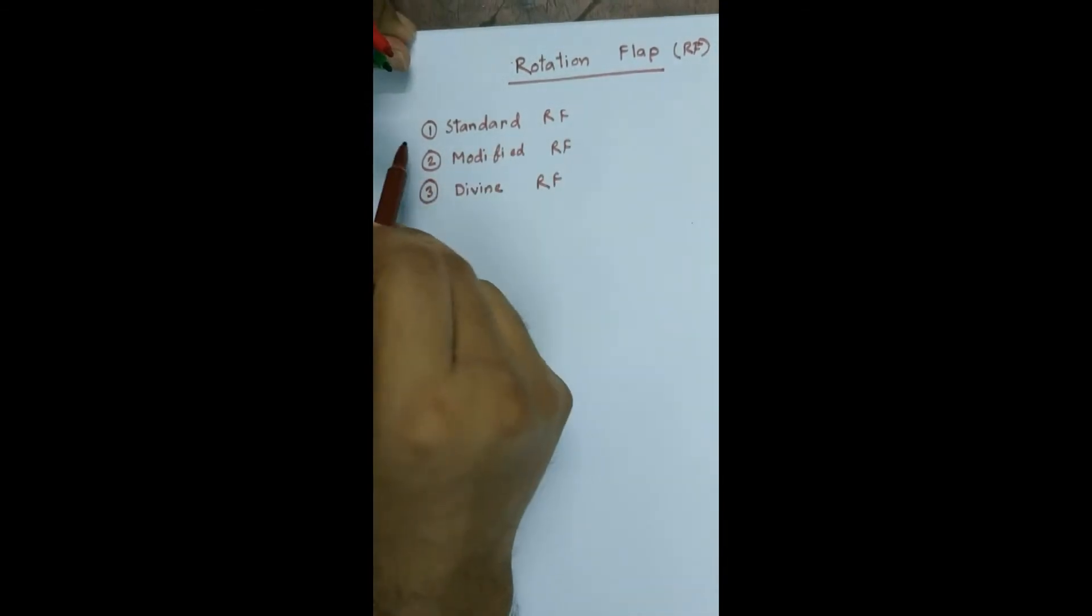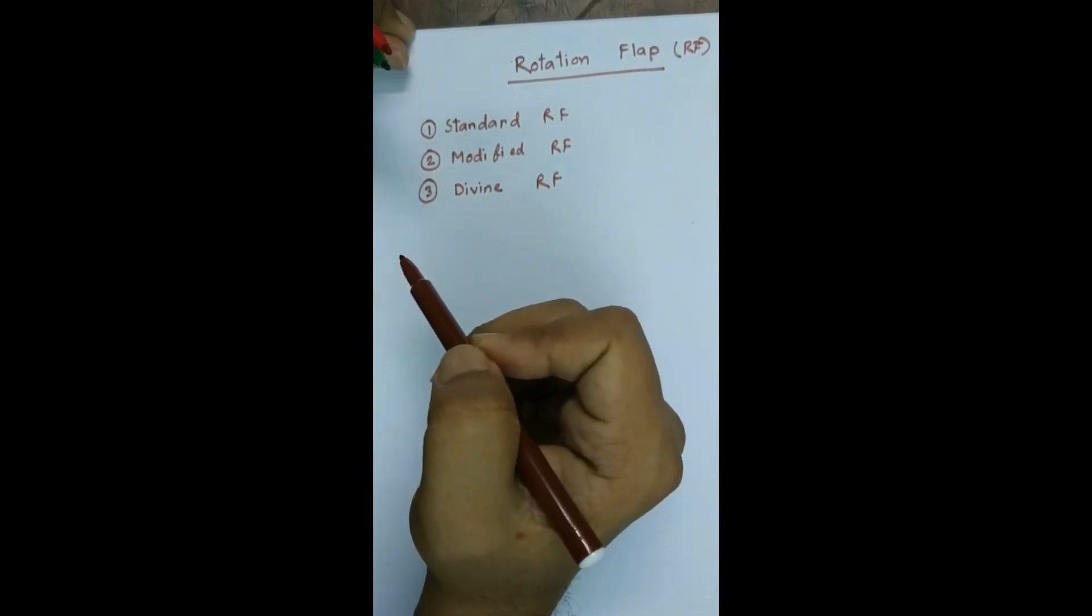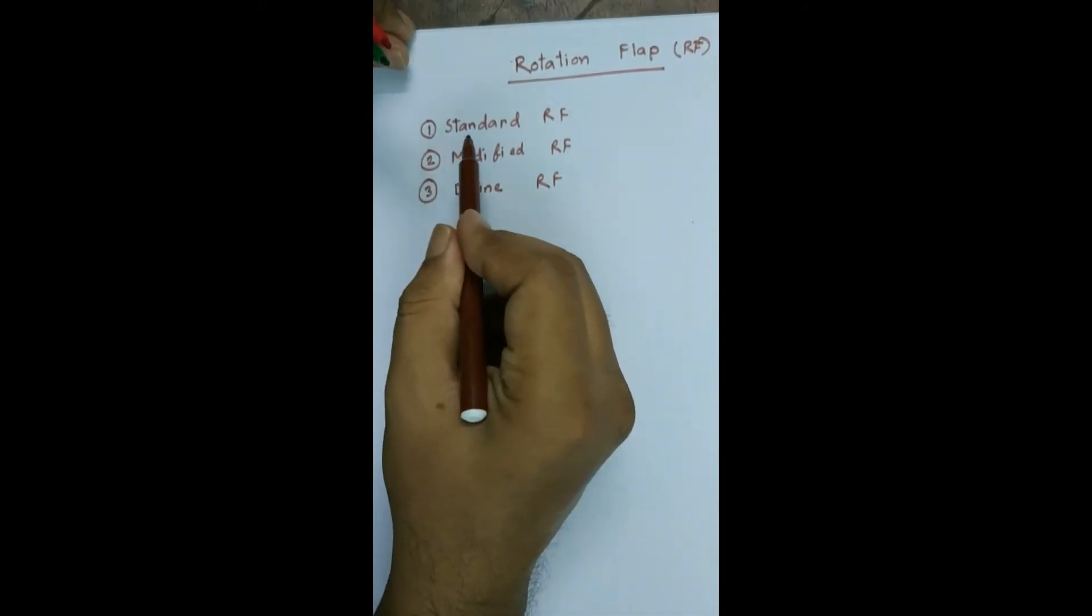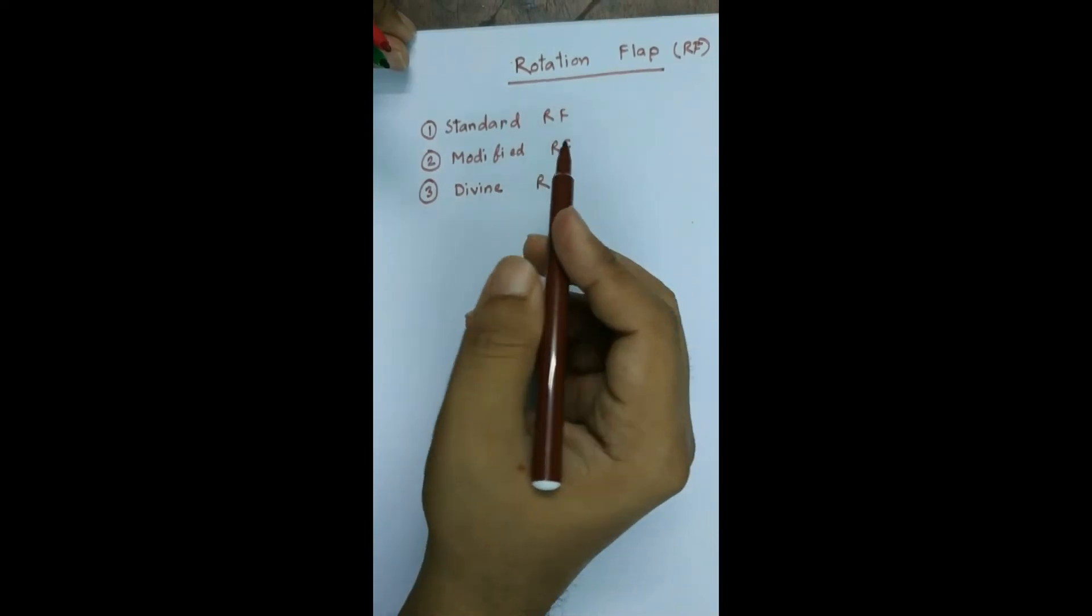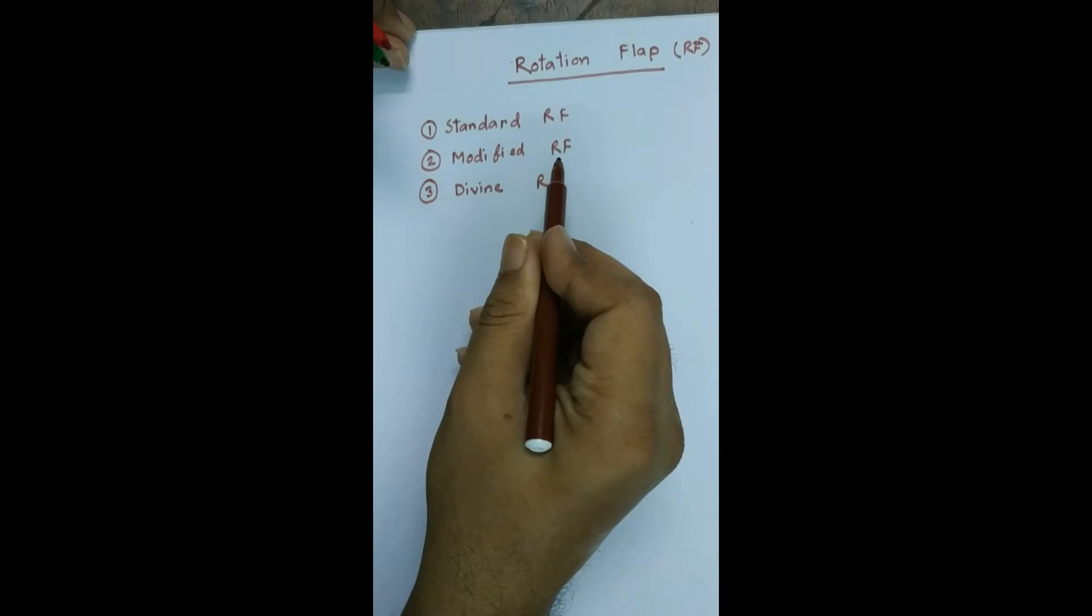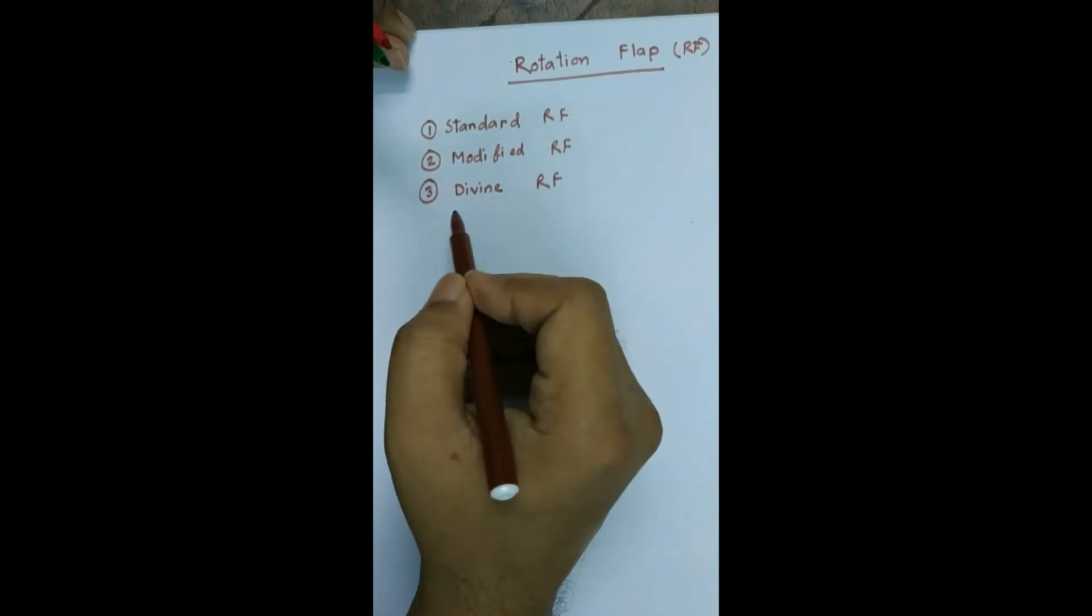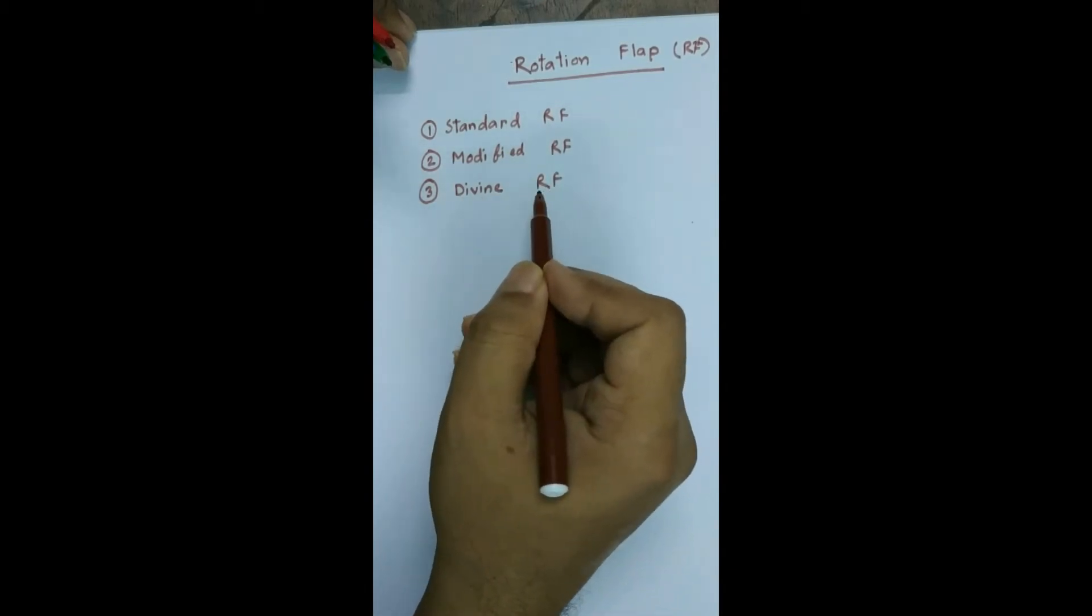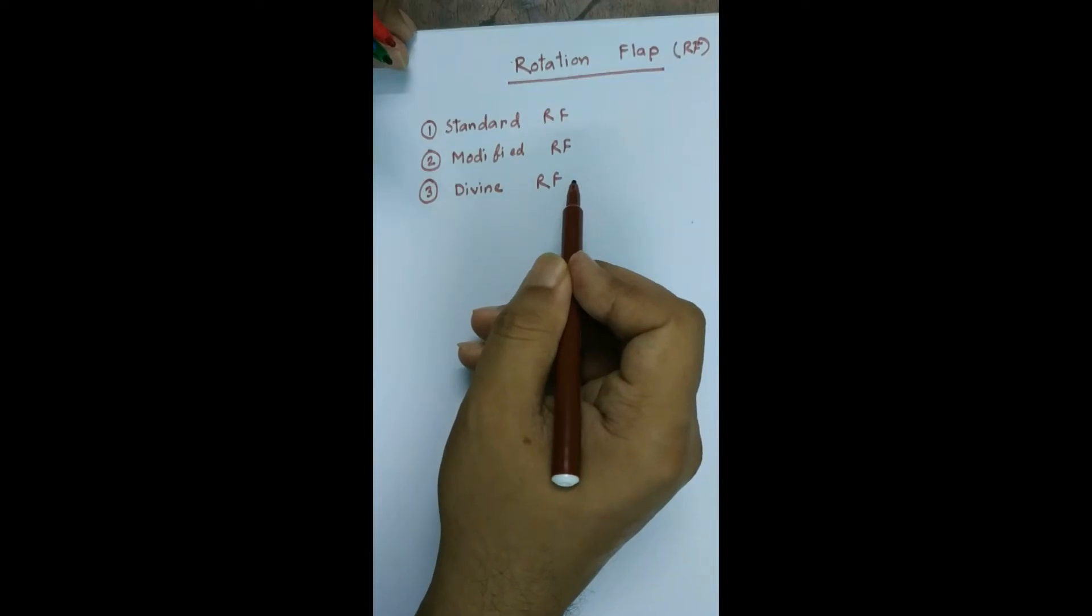There are three different designs based on completely different concepts for designing rotation flap. First, the standard rotation flap which is most commonly used. It is followed by Ahuja's modified rotation flap. And last but not least, the divine rotation flap which is based on the divine proportion and Fibonacci sequence.